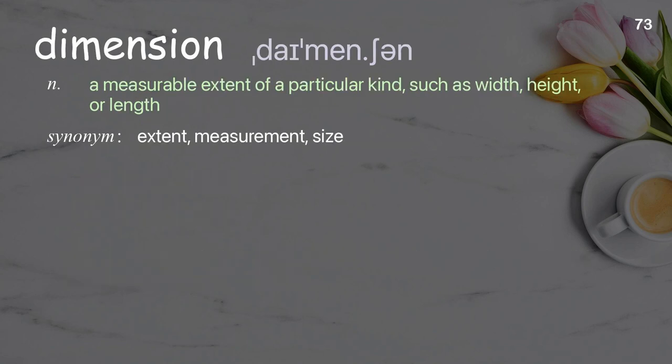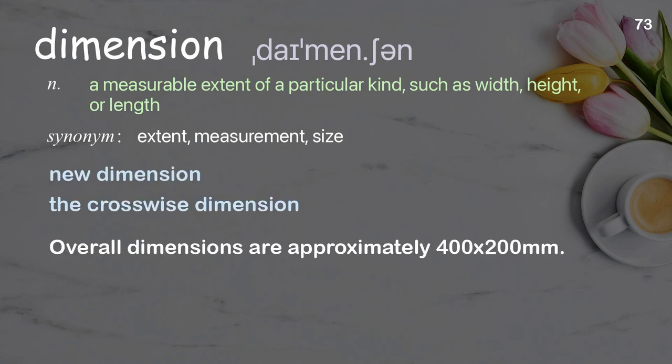Dimension: a measurable extent of a particular kind, such as width, height, or length. Examples: new dimension, the crosswise dimension. Overall dimensions are approximately 400 by 200 millimeters.